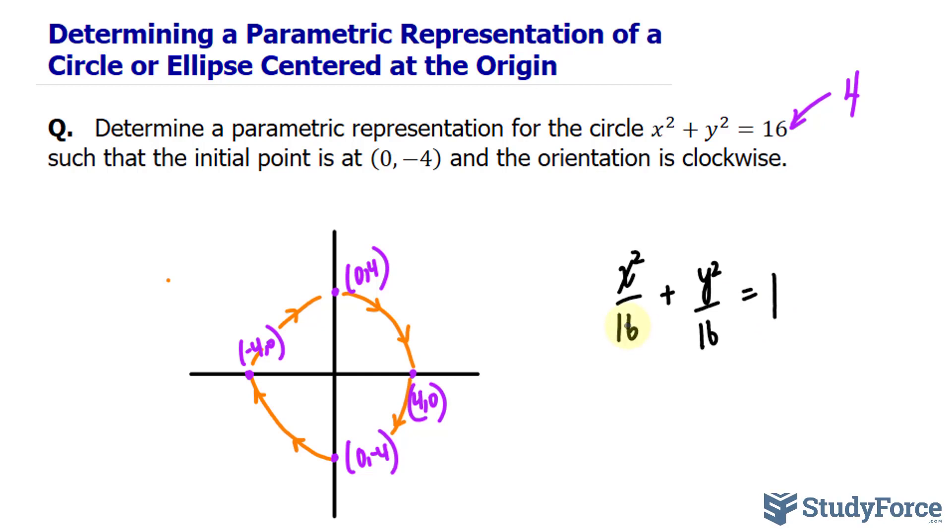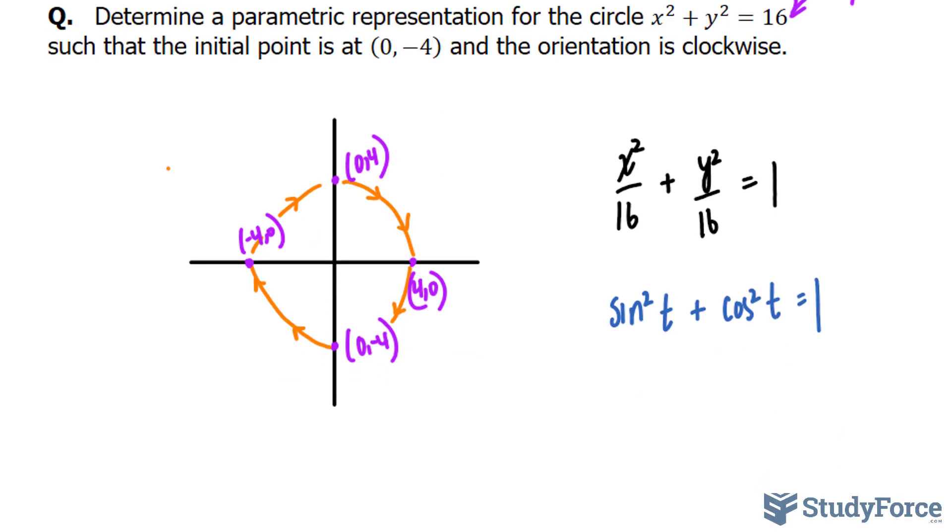As I mentioned before, if the denominators are the same, then we're dealing with a circle. Just be mindful of that. In step number 3, we'll use the Pythagorean identity, sine squared t plus cosine squared t is equal to 1, so that we can start to make one of the following substitutions and be very careful with this next part.